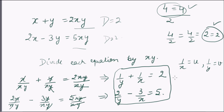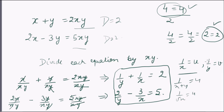Thus, all in all, we have studied that if we are provided with a non-linear pair, make proper substitutions such as 1/x = u, or 1/(x+y) = u, or 1/√x = u, and similarly for v. Then solve for u and v, and resubstitute the values to get x and y. That's all for now — thanks for watching Edupedia word videos.